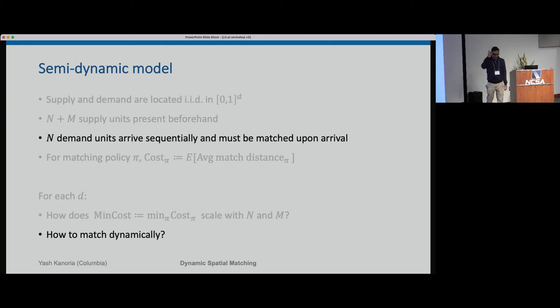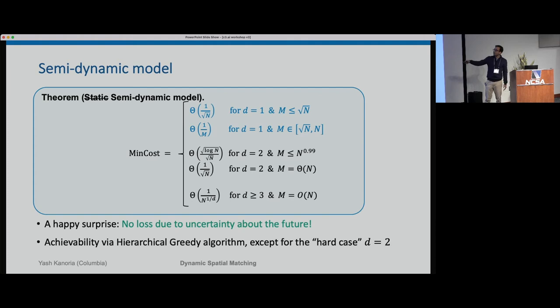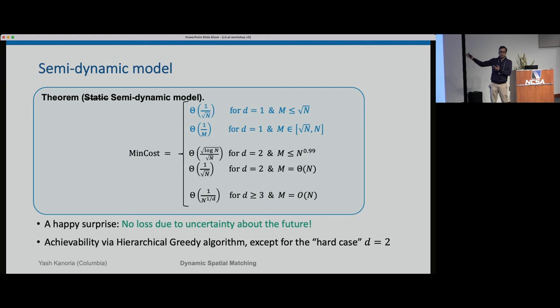The semi-dynamic model has demand units arriving sequentially and they must be matched upon arrival; everything else is the same as the static model. The theorem is the same form as before, but now for the semi-dynamic model. The uncertainty about the future causes only constant-factor changes in the cost — it obviously only increases the cost, but by only a constant factor. This means I don't lose anything significant despite there being dynamic arrivals.